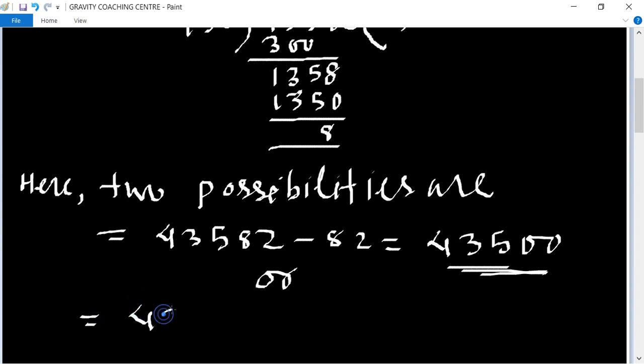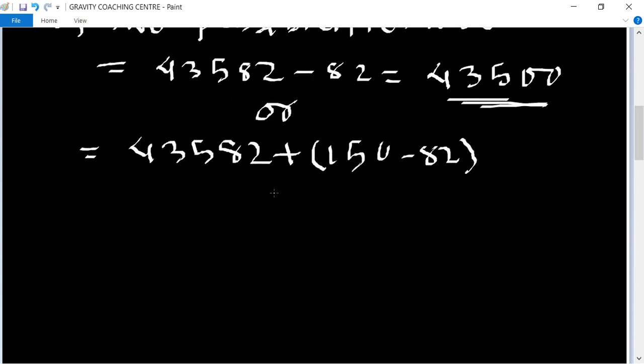The other number is 43582 plus (150 minus 82) equals 43582 plus 68 equals 43650.